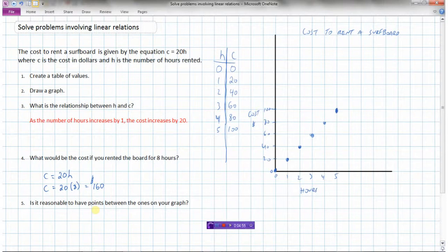How else could we figure this out? Well, we could go to our table here, and we could continue this pattern on. So 5 to 6 to 7 to 8, and these are going up by 20. So this would be $120, $140, $160. Okay, same thing.